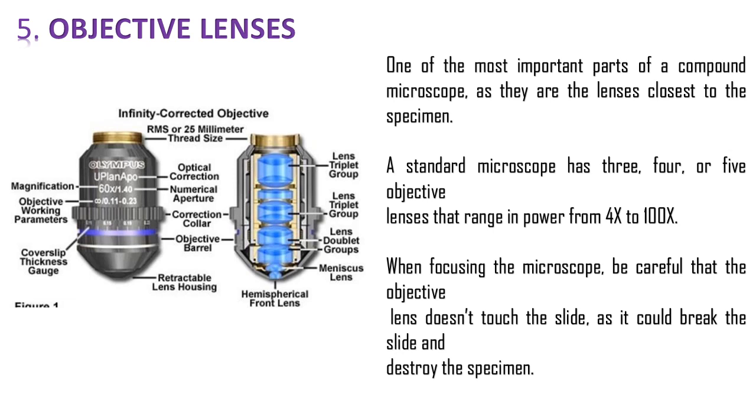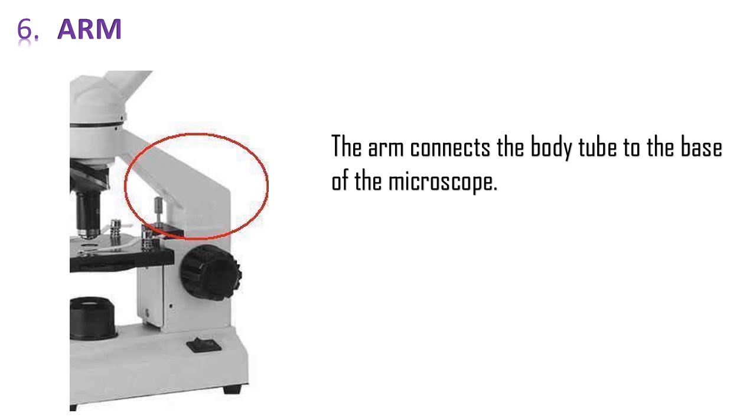And when focusing the microscope be careful that the objective lens doesn't touch the slide, as it could break the slide and destroy the specimen. Then number 6 is the arm region of a microscope. And it generally connects the body tube or the head region of microscope, which holds the objective and the eyepiece to the base of the microscope, which supports the whole part of a microscope.